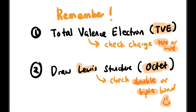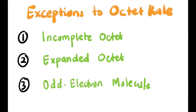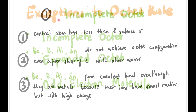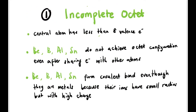Now let's go to the main part of this topic: exceptions to the octet rule. The octet rule states that everything must be octet when bonding, but there are three exceptions: incomplete octet, expanded octet, and odd electron molecules.